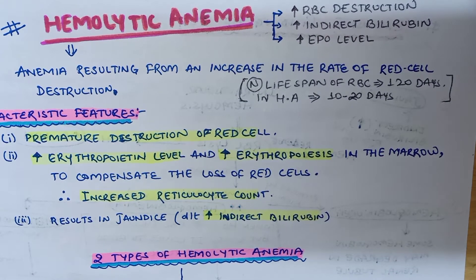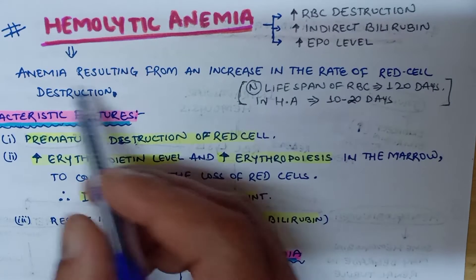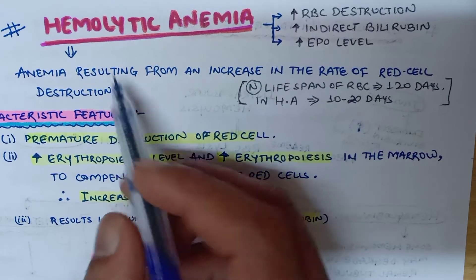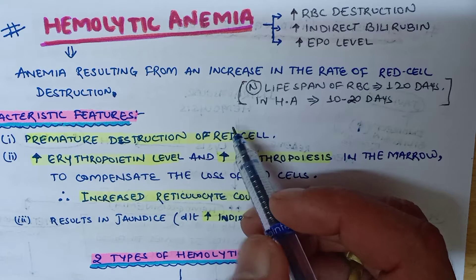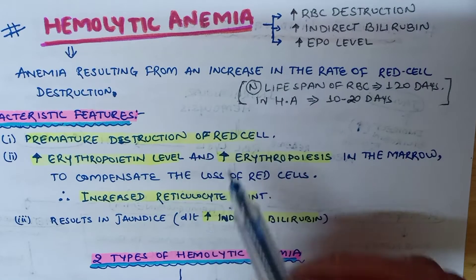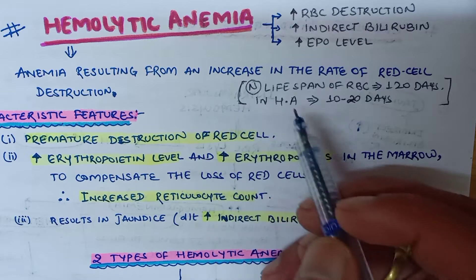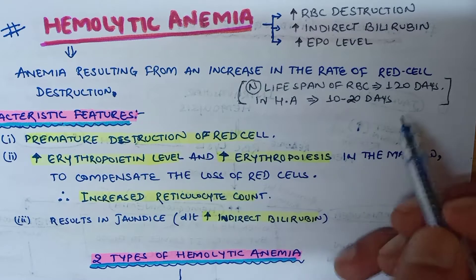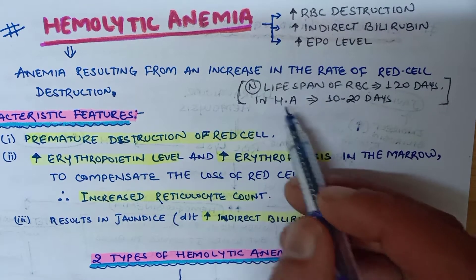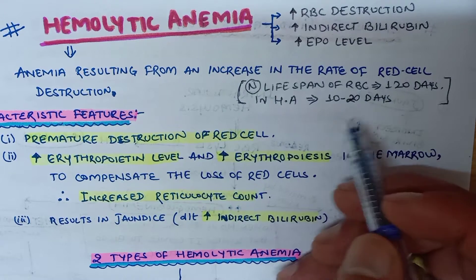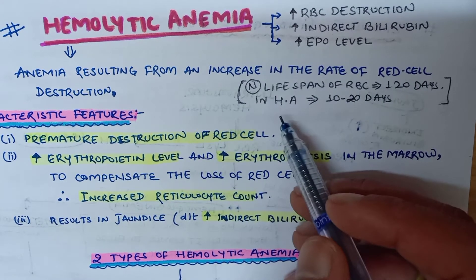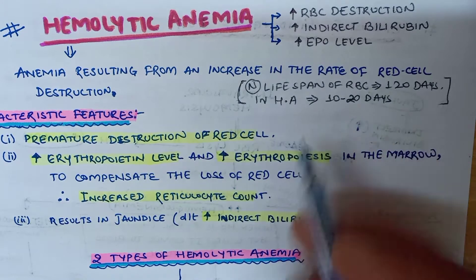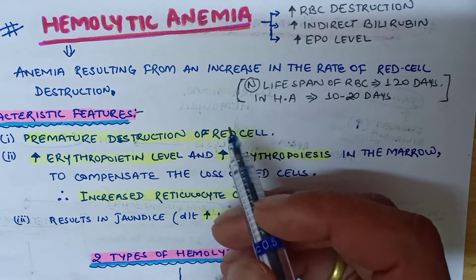Hemolytic anemia is an anemia resulting from an increase in the rate of red cell destruction. The normal lifespan of RBC is 120 days, but in case of hemolytic anemia the lifespan of RBC is only 10 to 20 days.